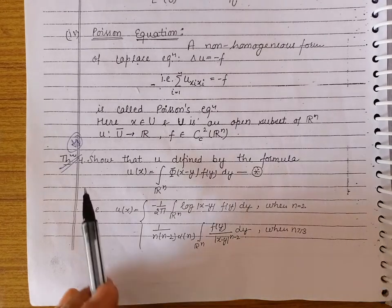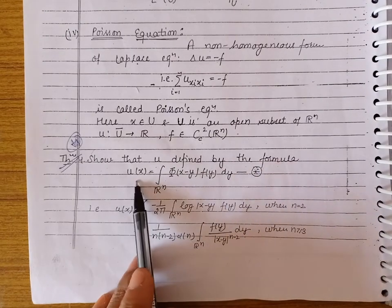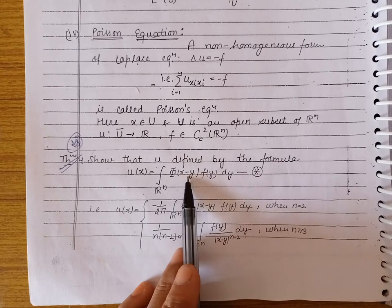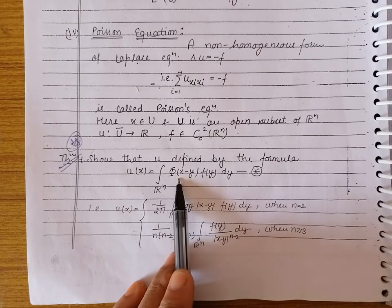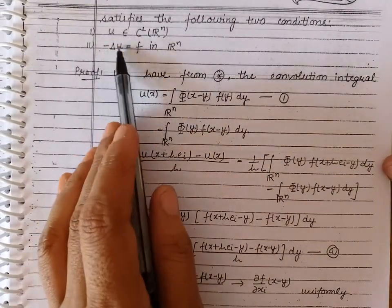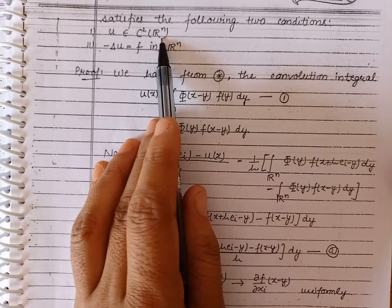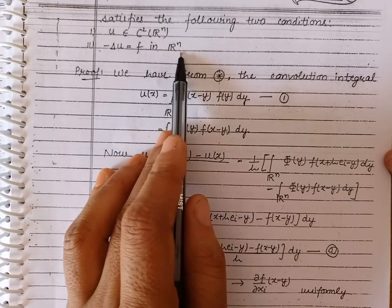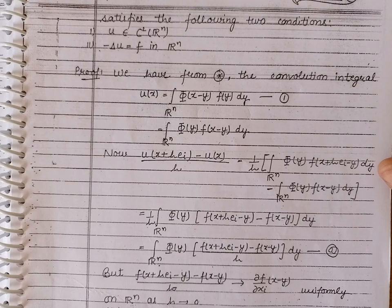The theorem states: show that the function u defined by the formula u = ∫_{Rⁿ} φ(x - y) f(y) dy, where φ is the fundamental solution of Laplace equation, satisfies two conditions. First, u is a twice continuously differentiable function on Rⁿ. Second, u satisfies Poisson's equation in Rⁿ.